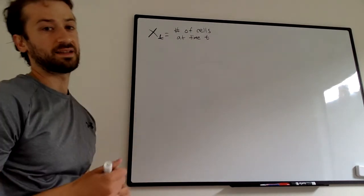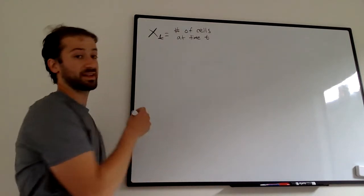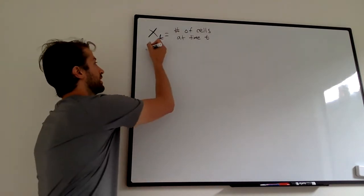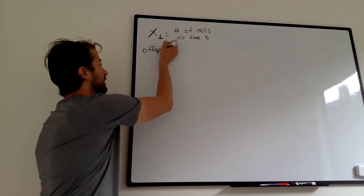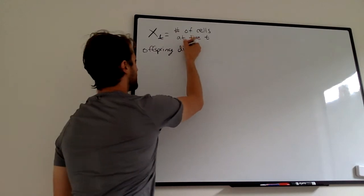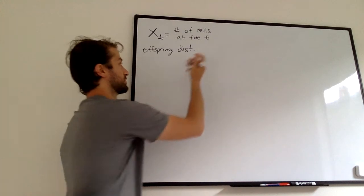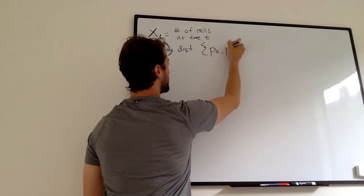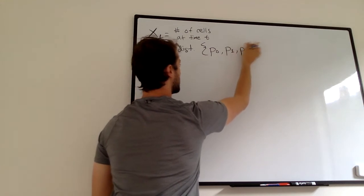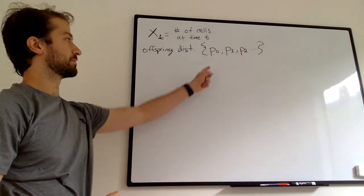These x sub t, the important feature about them is that they have an offspring distribution. The offspring distribution is p sub 0, p sub 1, p sub 2, dot dot dot, all the way.